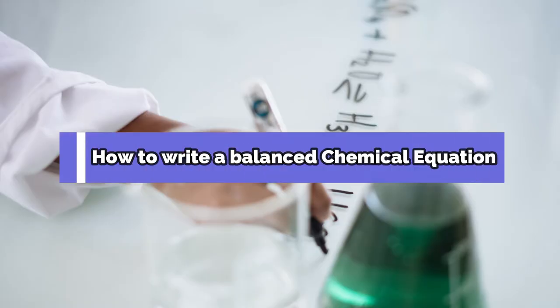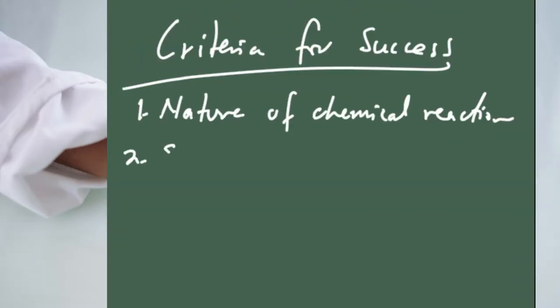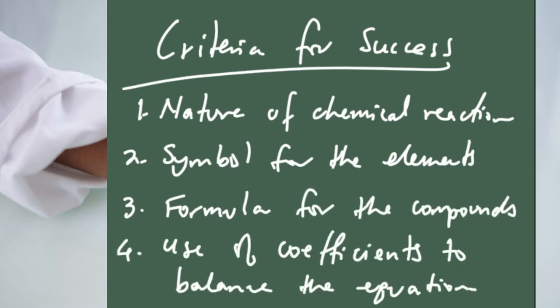How to write a balanced chemical equation? To correctly do so, we need to know the nature of the chemical reaction, symbol for the elements, formula for the compounds, and how to use coefficients to balance the chemical equation.